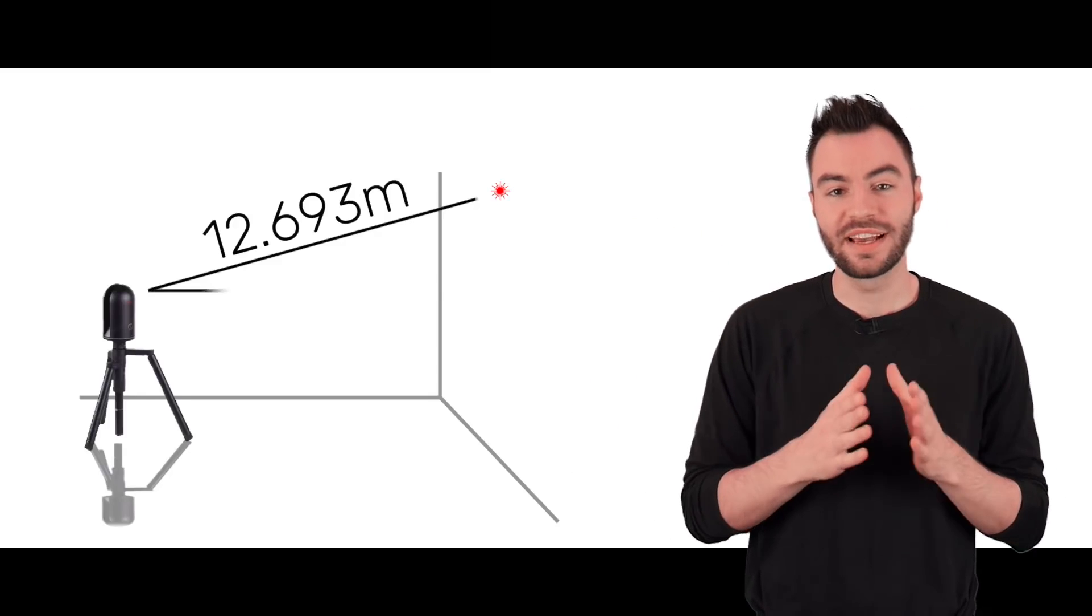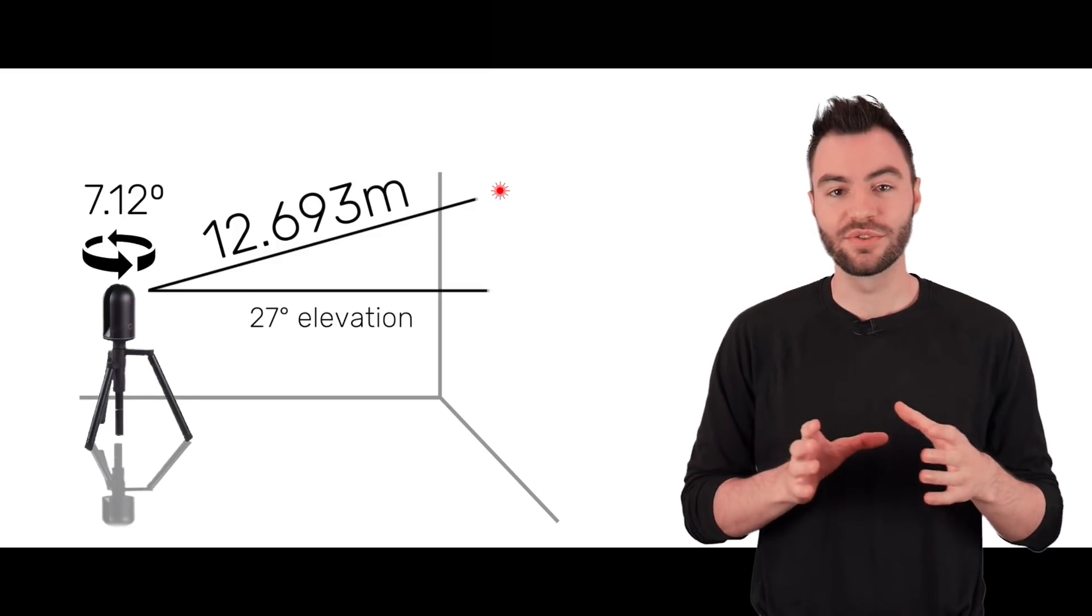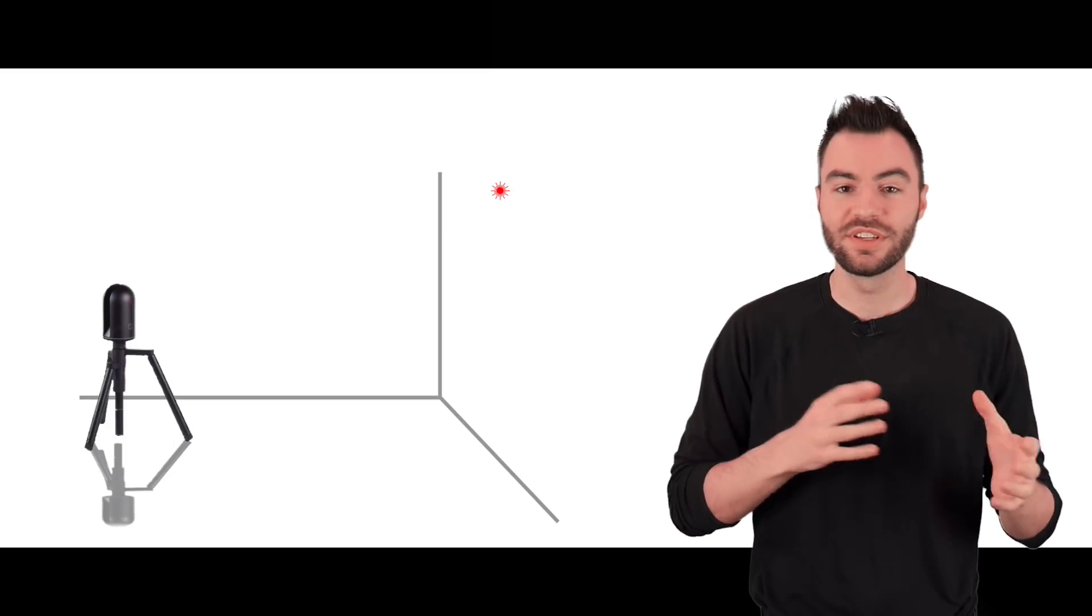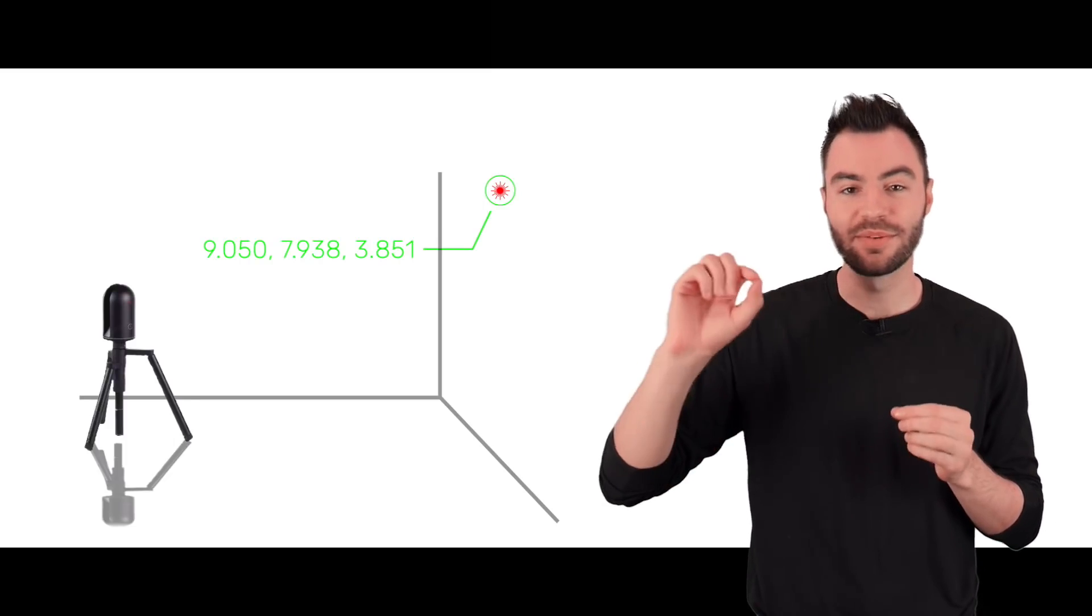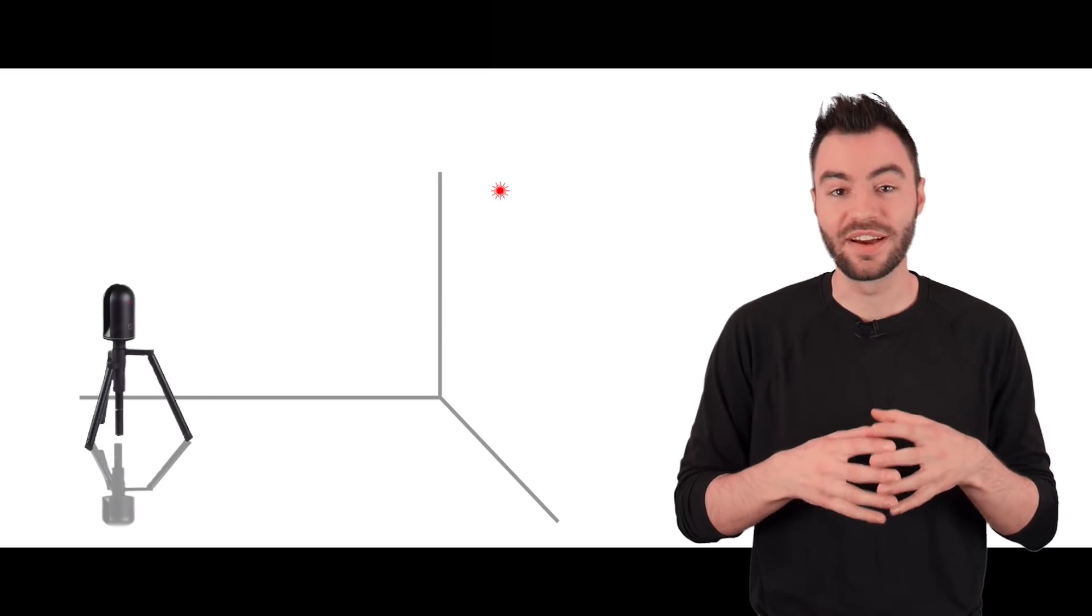Now it knows exactly how far away that object is. But it also knows exactly which angle the mirror was at when it sent out that pulse of light and which direction the BLK360 itself was facing. Using all that information it can calculate exactly where that 3D point is in space in relation to the device itself.